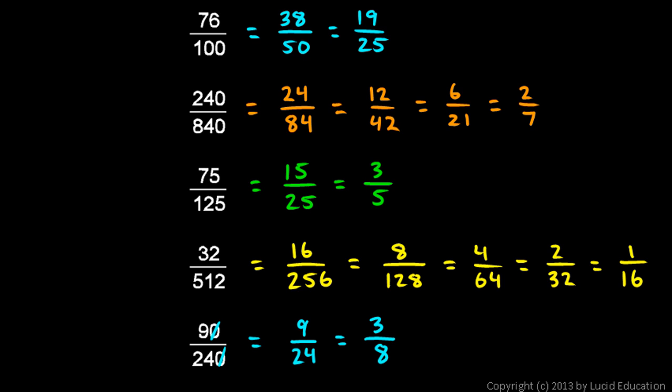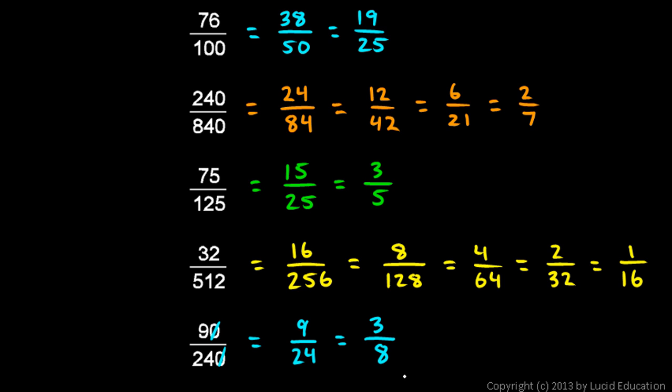The fundamental principle of fractions is that the numerator and denominator can be divided by the same number. What you do is find any number that both the numerator and denominator can be divided by, then proceed a step at a time. Each step makes your problem a little simpler until you get down to your final answer, which will always be the simplest form of the original fraction.